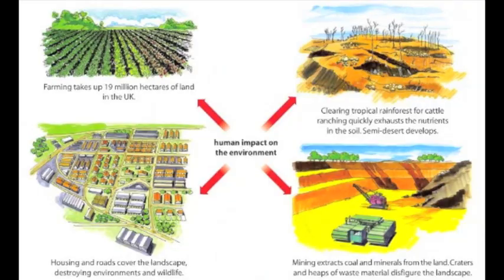Increasing population size increases the demand for the raw materials needed to make these goods. This can affect the environments which are the source of the raw materials. Human impact on the environment increased when people shifted from a nomadic hunting and gathering way of life to a more settled lifestyle.